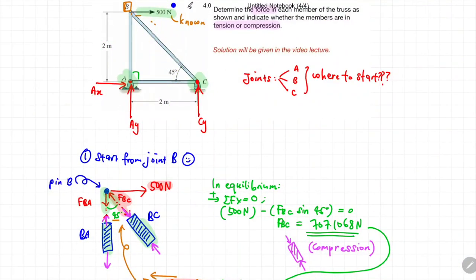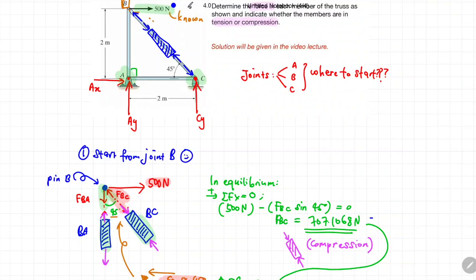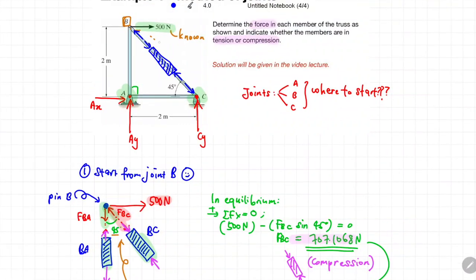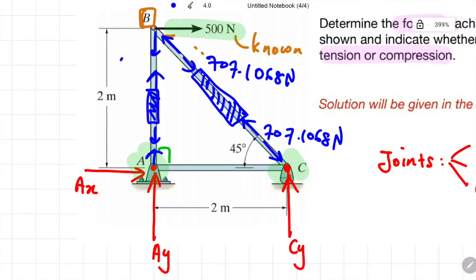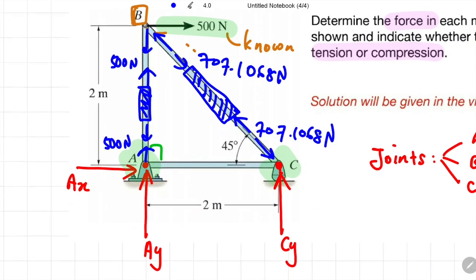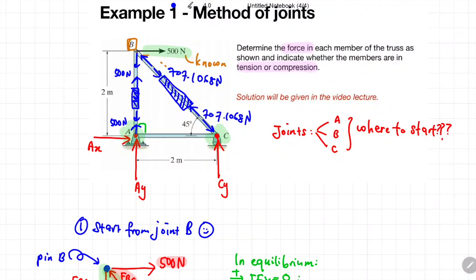Let me clear up the sketches. Redrawing the forces on beam BC: at one end the force is 707.1068 Newton, and at the opposite end the same magnitude acts in the opposite direction. For member BA, the force is 500 Newton at one end and 500 Newton in the opposite direction at the other end. We can now continue the analysis at other joints. Let us proceed to joint C.